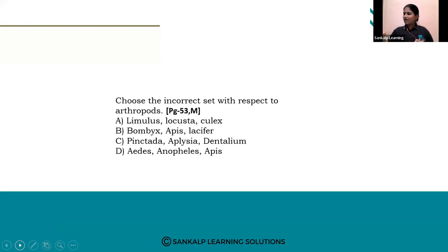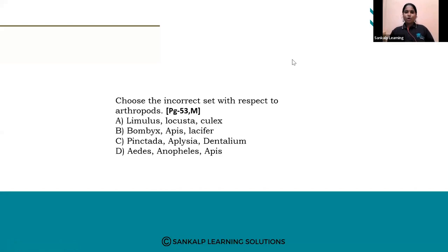Next question: Choose the incorrect set with respect to Arthropoda. Option A: Limulus, locust, Achilles. Option B: Bombyx, Apis, Scolofera. Option C: Pinctada, Aplysia, Dentalium. Option D: AIDS, Anopheles. The right answer is option C — these are examples of Mollusca, not Arthropoda.